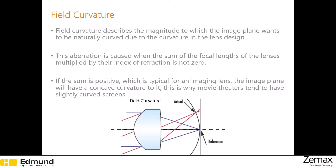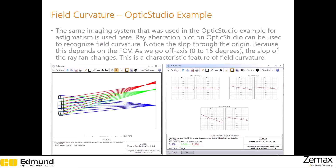The next aberration that we will discuss is field curvature. It describes the magnitude to which the image plane wants to be naturally curved due to the curvature in the lens design. This is the sum of the focal lengths of the lenses multiplied by their index of refraction, and when this sum is non-zero, the image plane will have a natural curved shape. In Optics Studio, using the same example as for astigmatism — since astigmatism and field curvature usually present together — notice the slope through the origin in the ray fan. As we go off-axis from 0 to 15 degrees, the slope of the ray fan changes, which is a characteristic feature of field curvature.